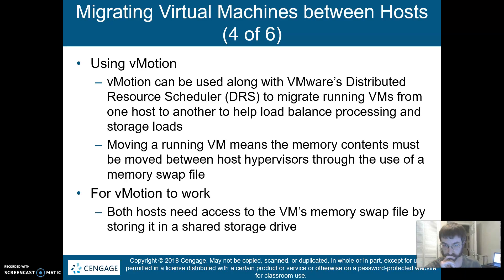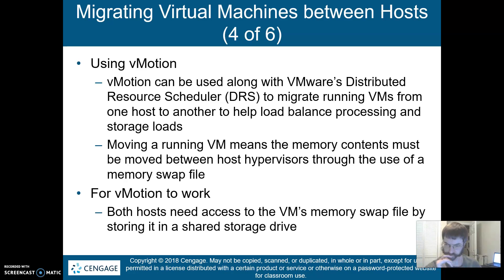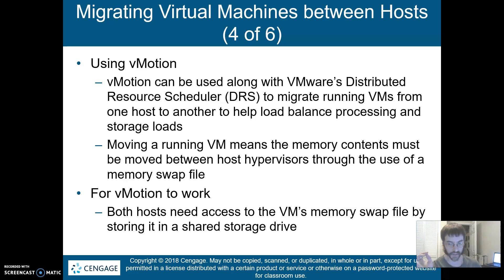One of the other things we can do with vMotion is tie it into DRS, the Distributed Resource Scheduler. The Distributed Resource Scheduler can make some of those decisions for you — it can notice things and prompt you and then act, or can just go ahead on its own. It will look for trigger states, performance issues, a certain level of CPU or memory usage, and then dynamically load balance across your systems. For vMotion to work, both hosts have to have shared storage. This does not work without some kind of shared storage, whether it's a NAS or a SAN.